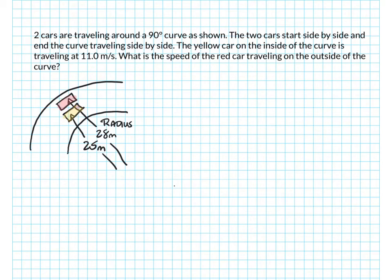Two cars are traveling around a 90 degree curve as shown. The two cars start side-by-side and end the curve traveling side-by-side. The yellow car on the inside of the curve is traveling at 11 meters per second. What is the speed of the red car traveling on the outside of the curve?